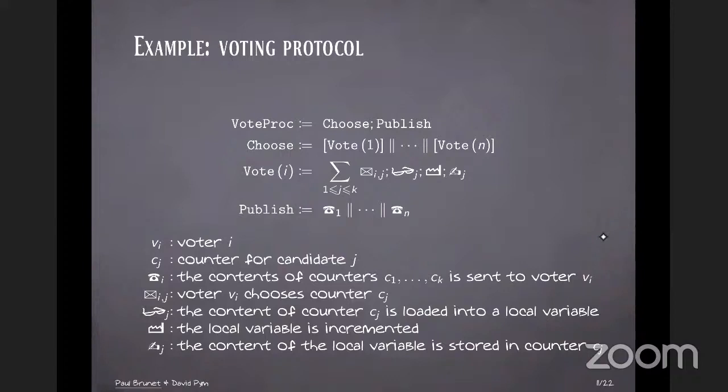So the protocol works as follows. First, there's a choosing phase where everybody votes and then there's a publish phase where every voter is sent the result of the vote. So for the choosing phase, every voter is inside the box.